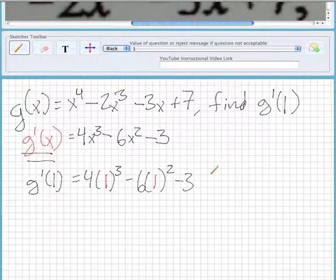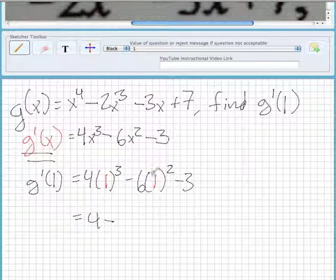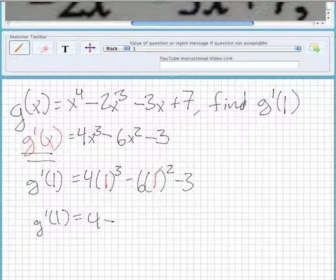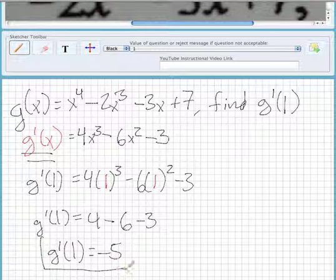So 1 cubed is 1, times 4 is 4. Then 1 squared is 1, times 6 is 6. So g'(1) equals 4 minus 6 minus 3, which is negative 5. And that's what we find for g'(1).